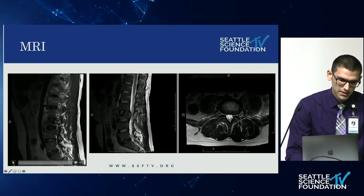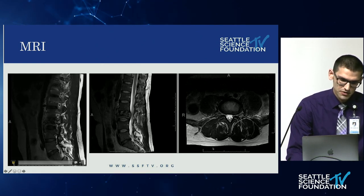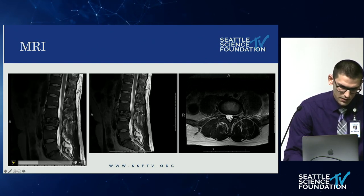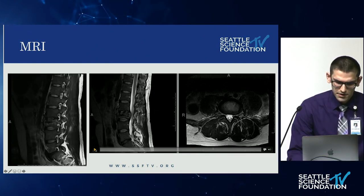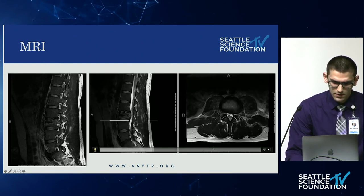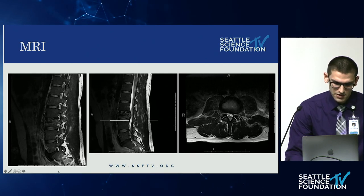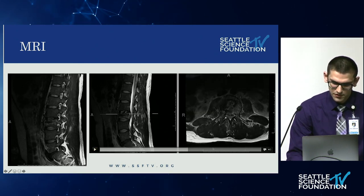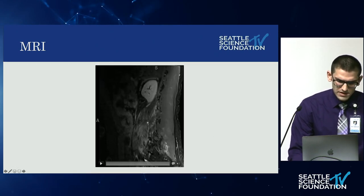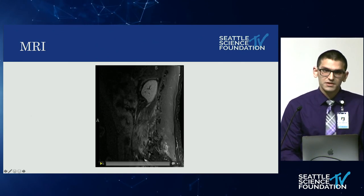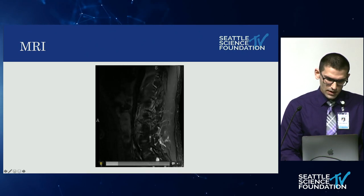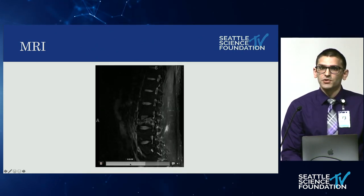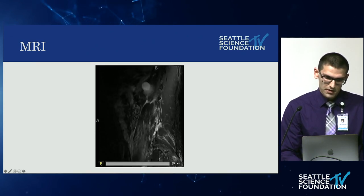Here we have an MRI scan — this is a T2 weighted image in sagittal view. You can see the narrowing quite nicely at L3. On the axial view you can see the spinal cord, the vertebral body, and the retropulsion. This is the STIR sequence, mainly looking for disruption in the posterior ligamentous complex. It highlights any edema as an indication of posterior ligamentous disruption, and I wasn't able to appreciate anything on this view.